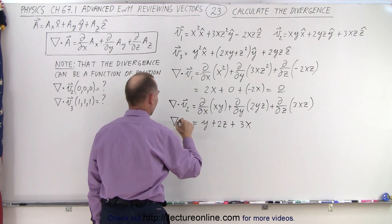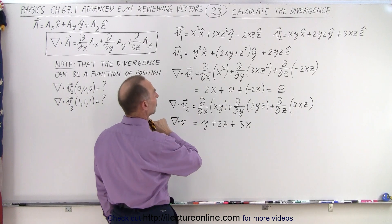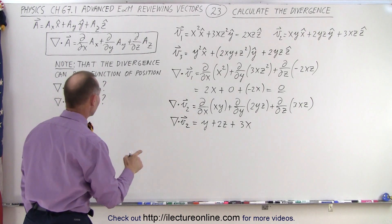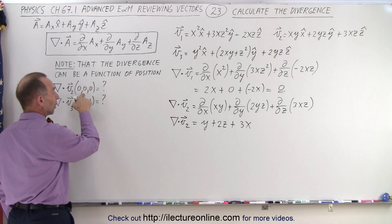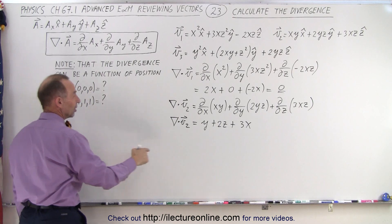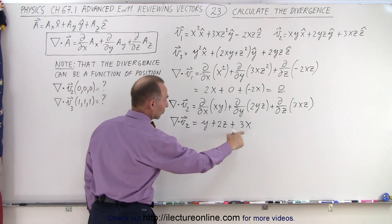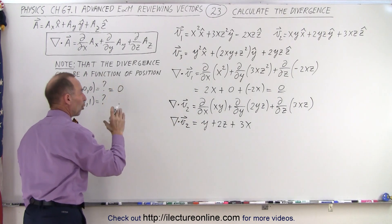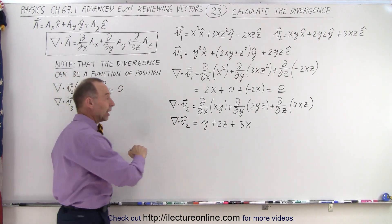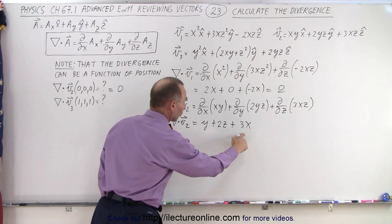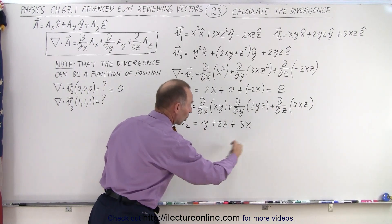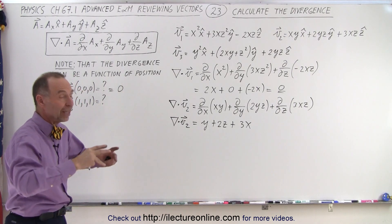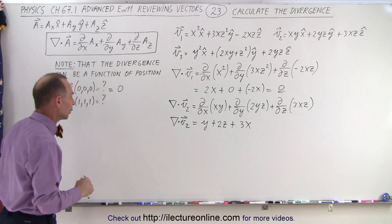So we have the divergence of vector field number 2 equal to y + 2z + 3x. Now, what is it equal to when we plug in (0, 0, 0) for x, y, and z? When I plug in 0 for x, 0 for y, and 0 for z, that is equal to 0. So at the origin there's no divergence, but at other locations there will be divergence, and the farther away from the origin, the larger the divergence — which means the vector field is increasing as you get farther and farther away from the origin.